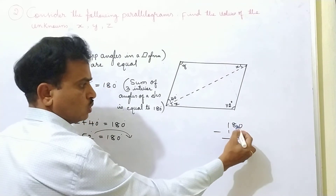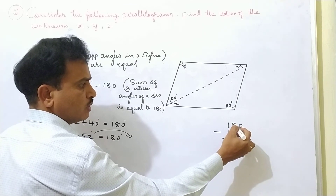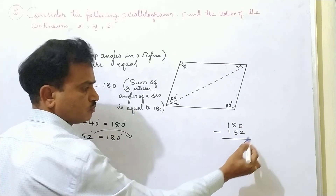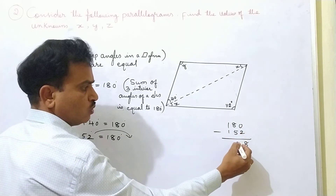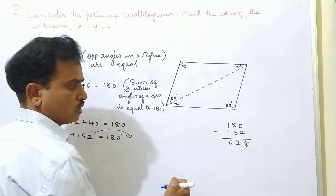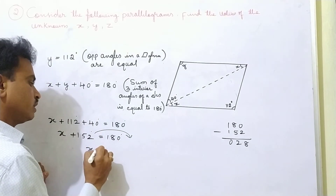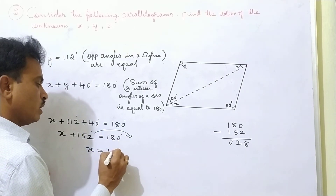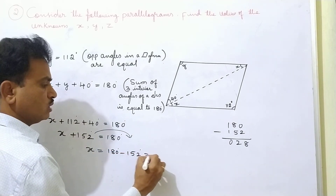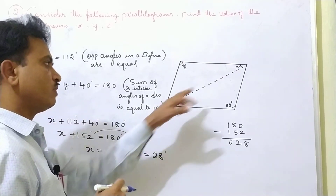So here, 180 minus 152: borrowing gives 10 minus 2 is 8, and 7 minus 5 is 2. That means X is equal to 180 degrees minus 152 degrees, which is equal to 28 degrees. So we got the X value.